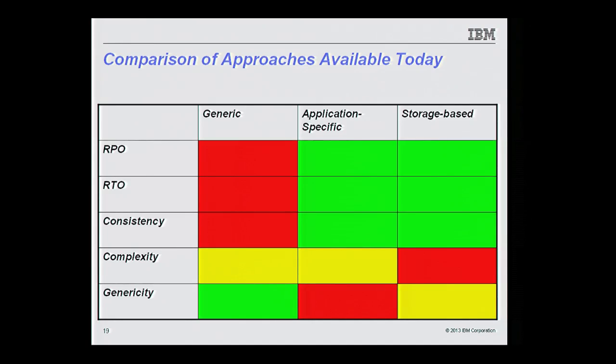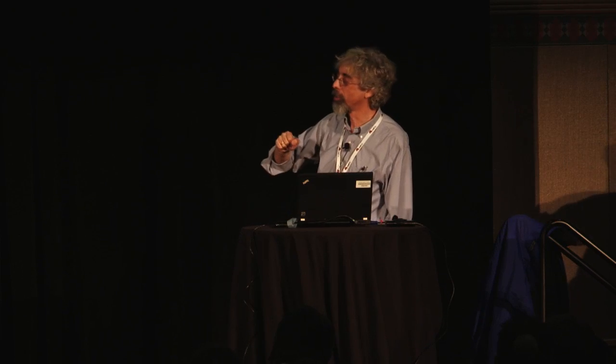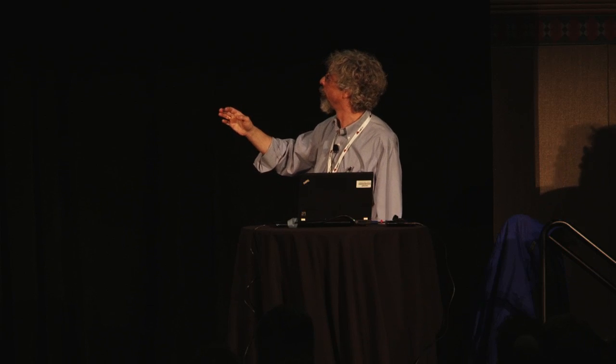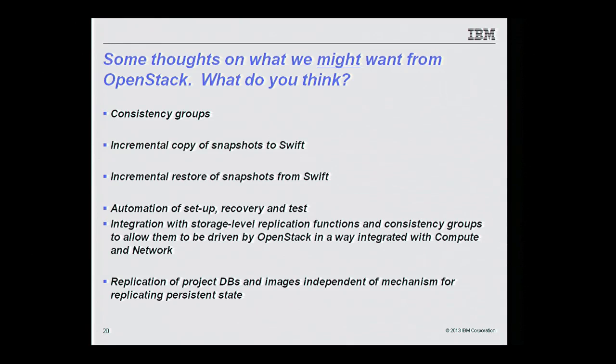Where I think we'd like to get to is improving the generic approach in terms of RPO, RTO, and consistency — though if we need to remain completely generic without taking advantage of storage or application knowledge, we'll probably never reach pure green on those parameters. We probably need to reduce the complexity of all solutions. We're never going to make the application-specific or storage-based approaches more generic. I'd like to hear what others in the audience think about what we might want from OpenStack.